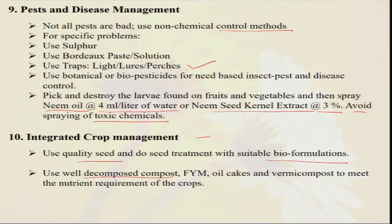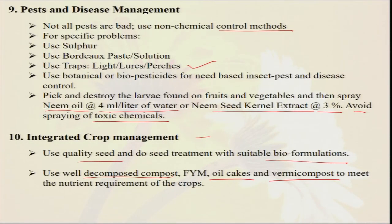You can also use neem oil at 4 liters per tank of water and neem seed kernel extract at 3 percent. Avoid spraying of toxic chemicals — integrated crop management is very much necessary. Always use quality seeds, as lots of organisms and pathogens stay within the seed and can cause insect pest and disease problems in your kitchen garden. If we use quality seeds and do seed treatment organically with trichoderma or hot water treatment, the chances of pest, especially disease, will be too much less. We should use well-decomposed FYM — not improperly composted material which may have insect larvae. We can use oil cakes because, although they are a bit costly and called concentrated organic manure, for our small organic kitchen garden we can easily purchase a few kilos of sesame cake, mustard cake, or sunflower cake to use as a manure system.